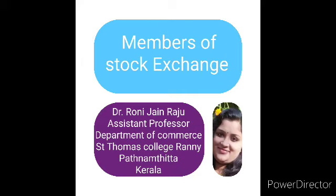The next type is the arbitrager. An arbitrager is a broker who tries to make profit by exploiting price differences in two different stock exchanges. A particular security may be listed in both stock exchange A and stock exchange B. The arbitrager purchases that security from the exchange with the lower price and sells it in the exchange with the higher price, thereby making profit from the price difference.